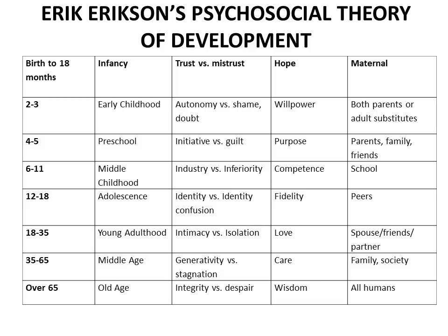From birth to 18 months — infancy — the big crisis is trust versus mistrust. If you learn to trust, you develop hope. The main influence at this stage is your mom, who is usually the primary caregiver. Ages two to three — early childhood — is when potty training occurs. The crisis is autonomy versus shame or doubt, and what you develop is willpower. Both parents or adult substitutes such as grandparents, daycare, or babysitters are the main influences.